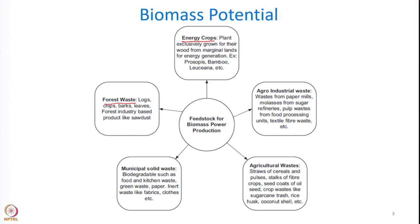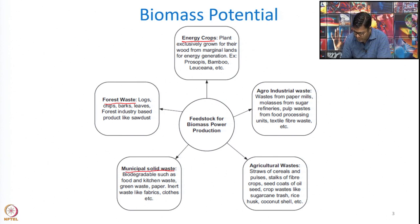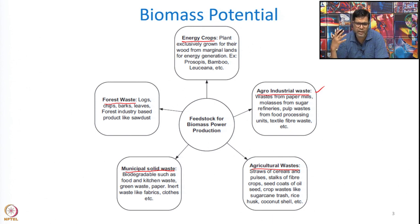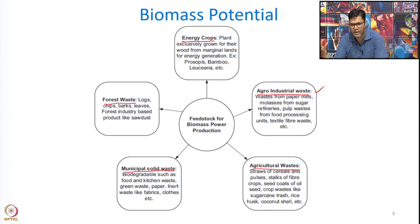When we look at other waste categories, these are municipal solid waste, agriculture waste, and agro-industrial waste. Agro-industrial waste comes from paper mills, molasses from sugar refineries, and industries like biscuit, ketchup, and chips — where they don't use 100 percent of the biomass for their desired product, so a lot of waste is generated.